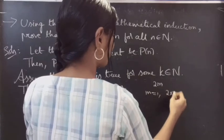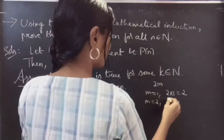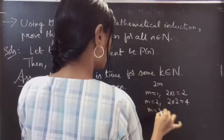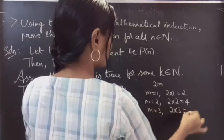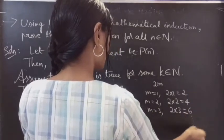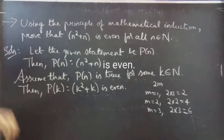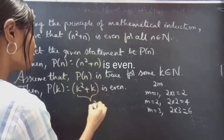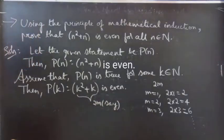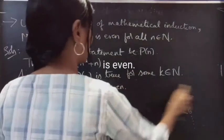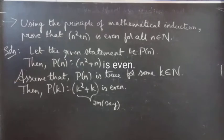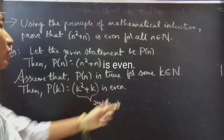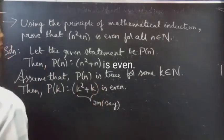Since k squared plus k is even, we can write it as 2m for some natural number m. Note that 2 times m gives even numbers: when m equals 1 you get 2, when m equals 2 you get 4, when m equals 3 you get 6, and so on — these are all multiples of 2. So we write k squared plus k equals 2m.